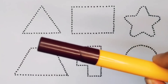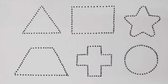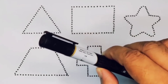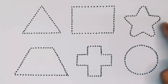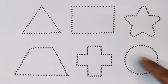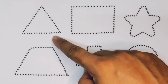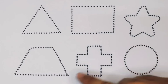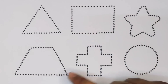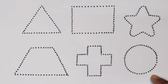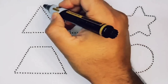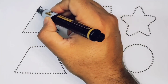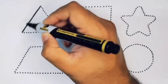Chocolate color and black color. Now let's learn the 2D shapes: triangle, rectangle, star, trapezium, cross, and circle. First we're going to draw the shapes. Triangle.